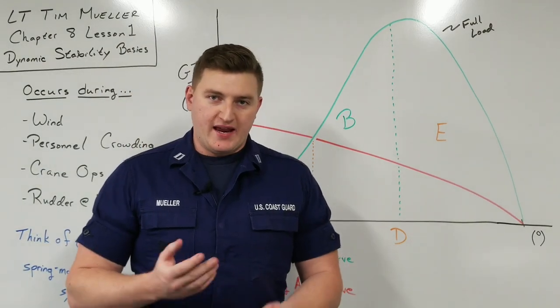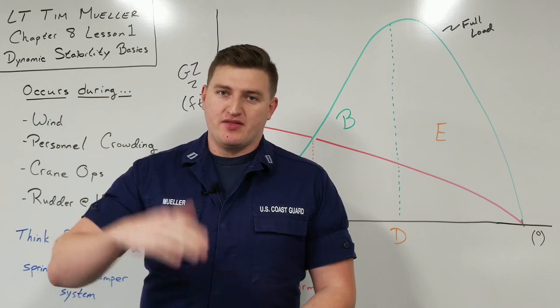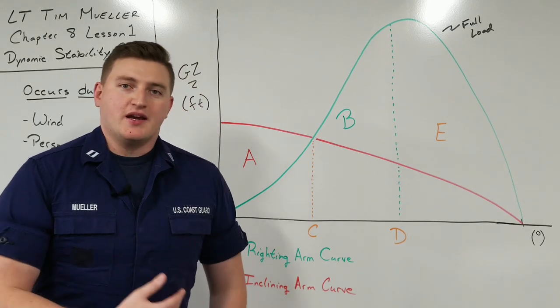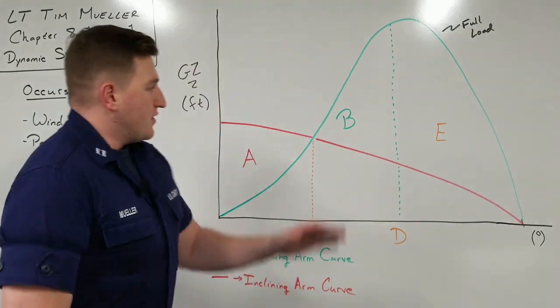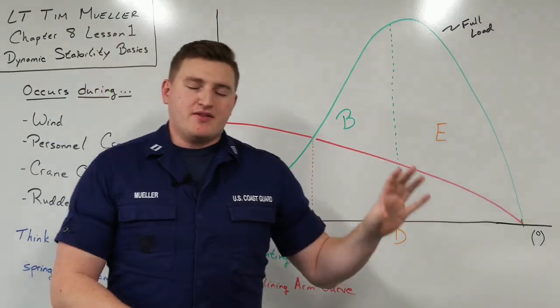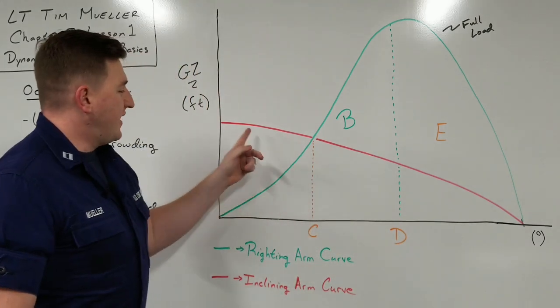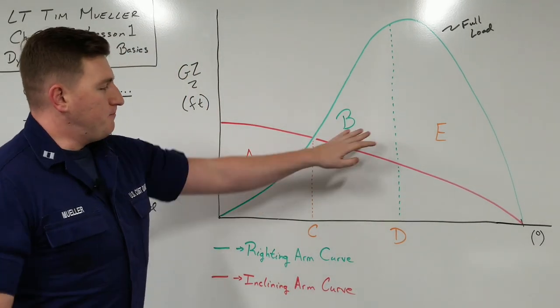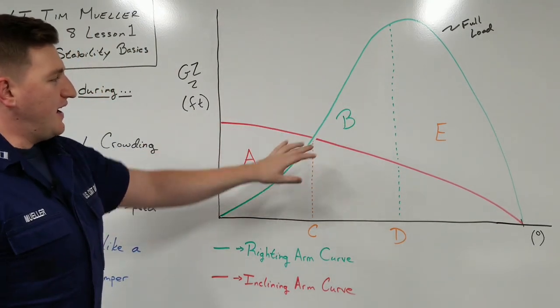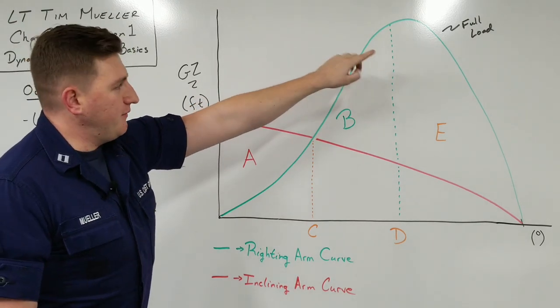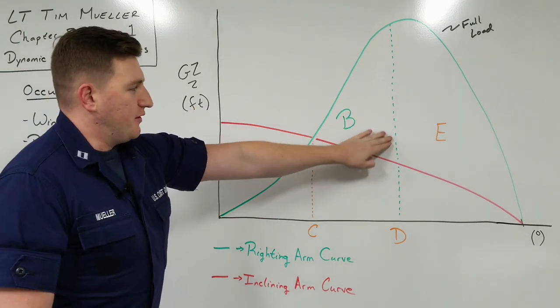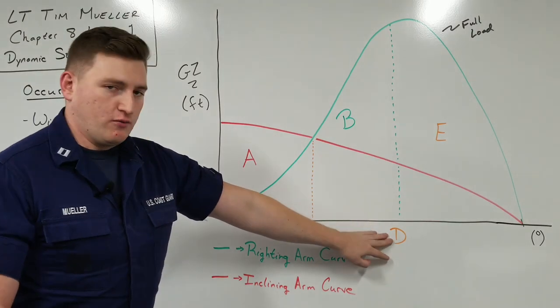Now, our bad energy is the area where the inclining moment or the inclining energy is greater than the righting energy. Everything where the righting energy and the righting arm is greater than the inclining energy or arm is going to be our reserve dynamic stability. So all of this right here, this B and E, is basically the ship's ability to withstand anything that comes from this alpha. B here is the point. So it's this triangle. And it is bounded by the full load curve right here, the inclining energy curve where the full load is greater than the inclining. And then this third boundary to it is the angle of maximum roll. We'll get to that in a second.